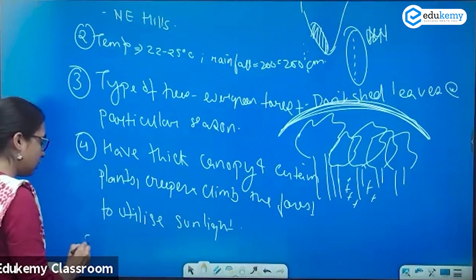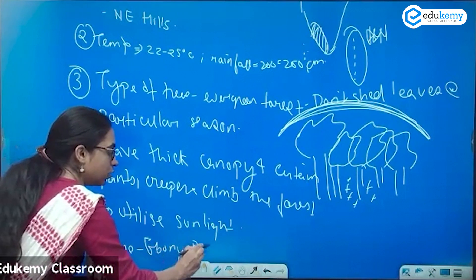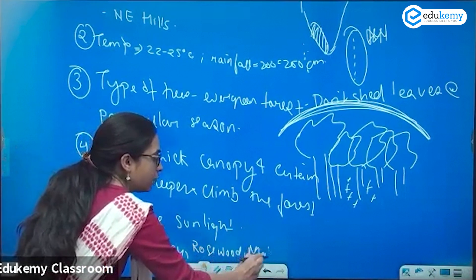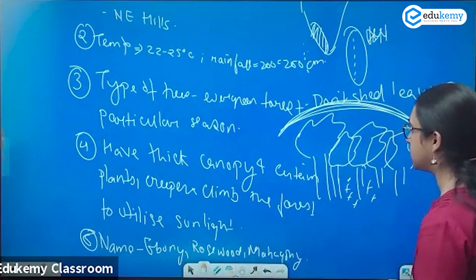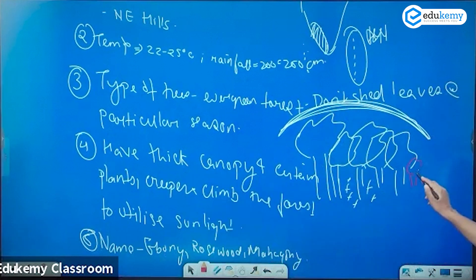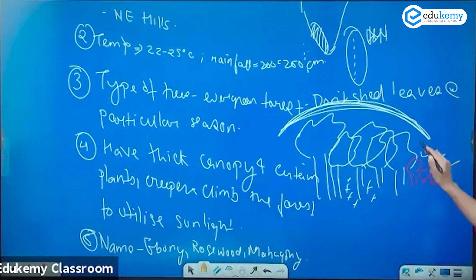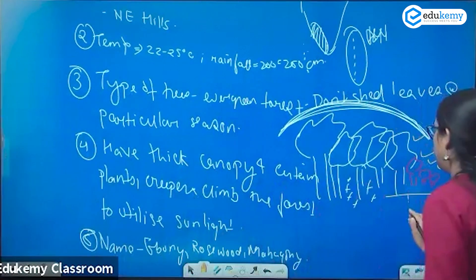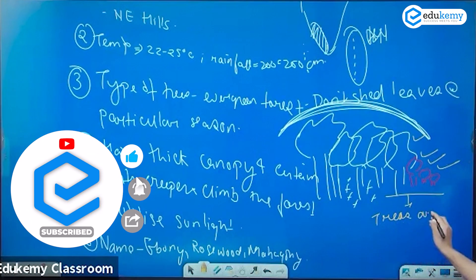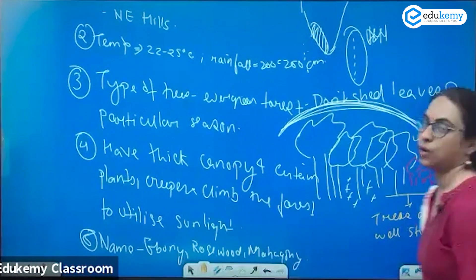What are the species names? The names of the species are Ebony, Rosewood, and Mahogany. One other distinct feature of the forest is the trees are stratified — there are various layers of the trees: strata one, strata two, strata three, strata four. The trees are well stratified.